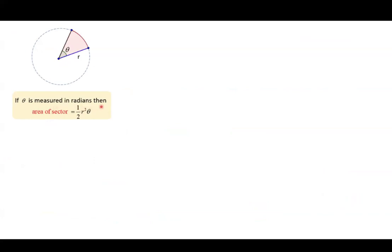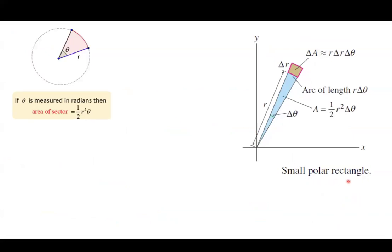What is the proof behind this? Remember that if theta is measured in radians, the area of a sector is one half R squared times theta — this is what we learned in algebra. Now if you think about a smaller polar rectangle, this is the length R, just the radius, and this small portion represents the difference in theta, which we denote by delta theta. This length here is the arc of length R delta theta, and delta A can be approximated by R delta R times delta theta.